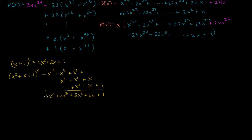You might already see the pattern. When you took (x+1)², the coefficients went 1, 2, 1. When you squared (x²+x+1), the coefficients went 1, 2, 3, 2, 1 — peaking out at the middle term. So the coefficients increase and then decrease symmetrically.